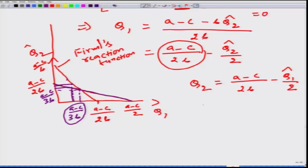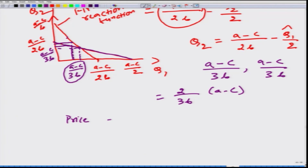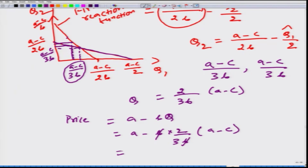In Cournot competition, each firm produces (a minus c) divided by 3b. Total production is 2 times (a minus c) divided by 3b. The equilibrium price is a minus b times q, which gives us (a minus b times 2(a minus c) divided by 3b), simplifying to (1 divided by 3b) times (3a plus 2c) divided by 3. This is the price in Cournot competition. We will come back to the Cournot competition when we compare it with Stackelberg competition. Thank you.